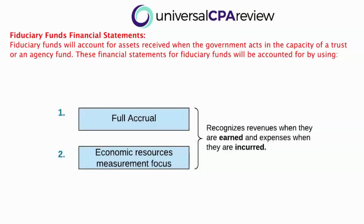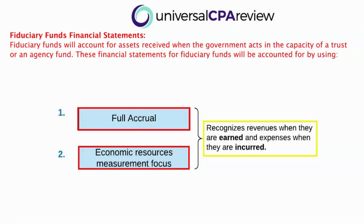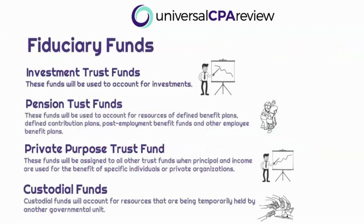Now let's wrap up by understanding the fiduciary funds. Just like the proprietary funds, these are going to apply the full accrual basis of accounting — recognizing revenues when earned and expenses when incurred — as well as the economic resource measurement focus. Fiduciary funds will recognize their individual financial statements the same way as proprietary funds, including long-term fixed assets and long-term liabilities. The funds related to fiduciary funds consist of the investment trust funds, the pension trust funds, the private purpose trust funds, and the custodial funds.